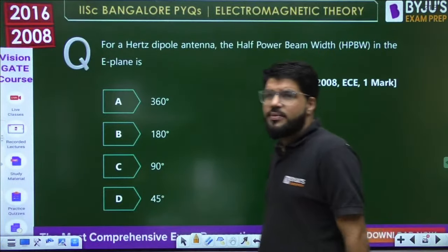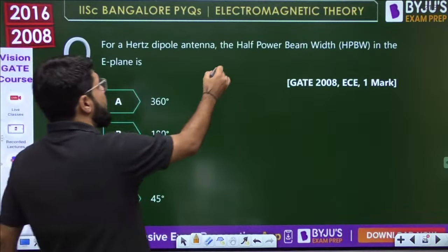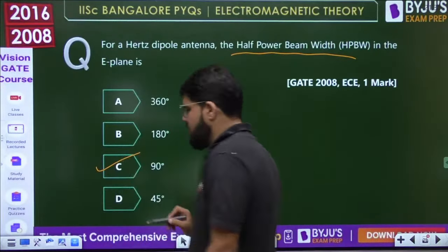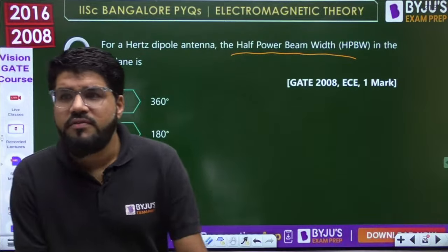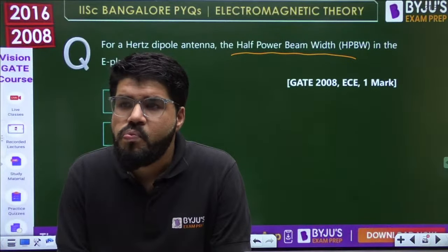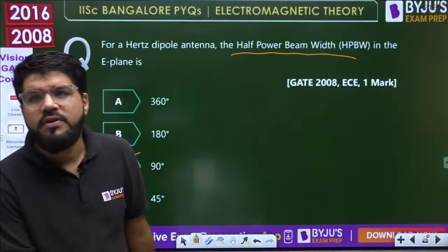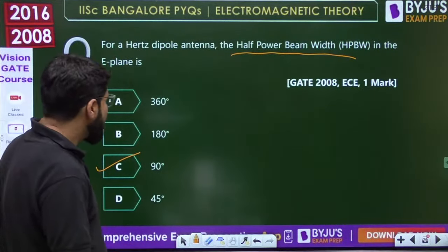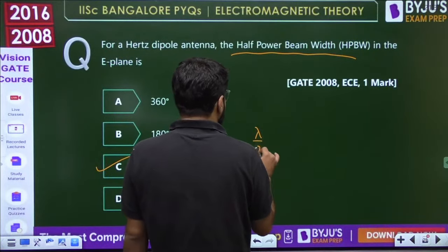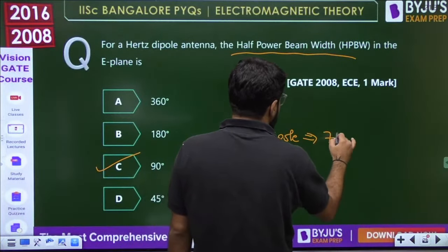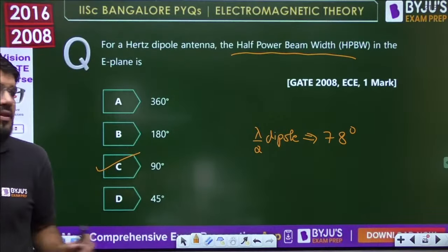Let me jump to some antenna questions. For a Hertz dipole antenna, the half-power beam width (HPBW) in the E-plane is 90 degrees — this has a simple derivation. If it were a λ/2 dipole, the HPBW would be 78 degrees.